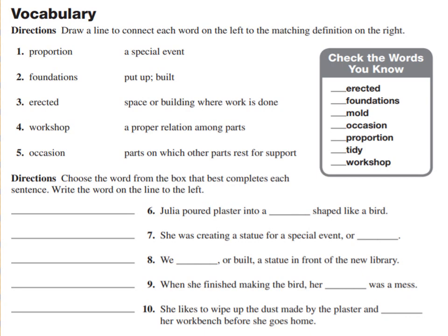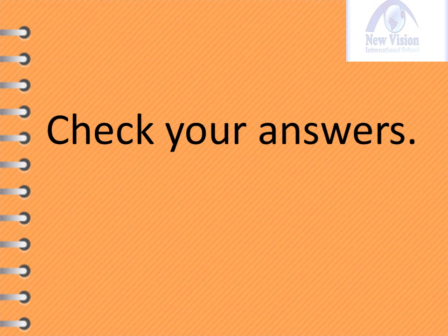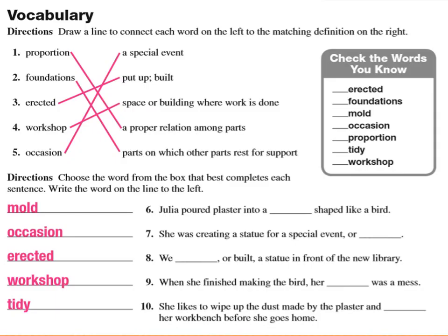Please pause this video and take time to answer this page. It's now time to check your answers. Number one: proportion — proper relation among parts. Number two: foundations — parts on which other parts rest for support. Number three: erected — means put up or built. Number four: workshop — means space or building where work is done. Number five: occasion — is a special event.